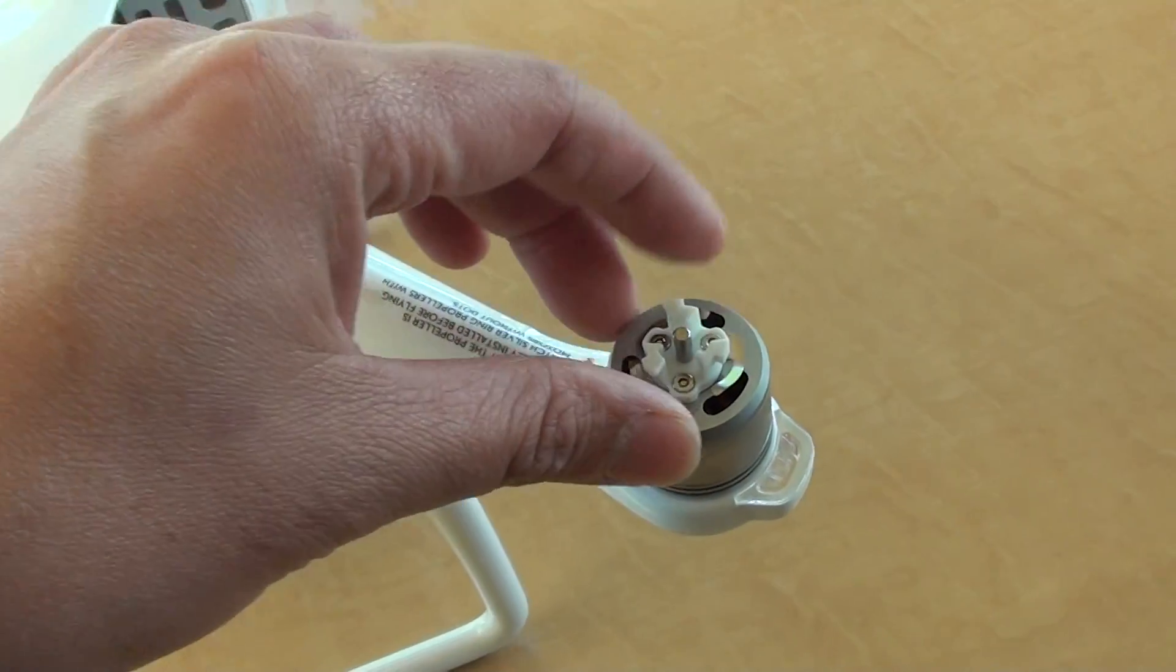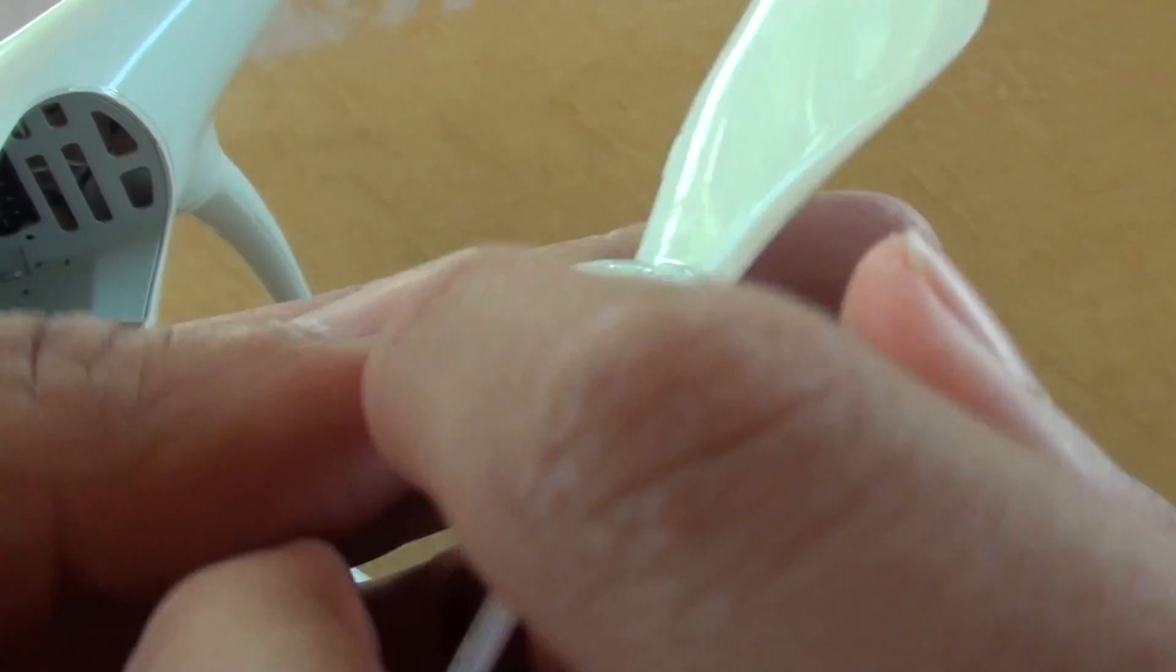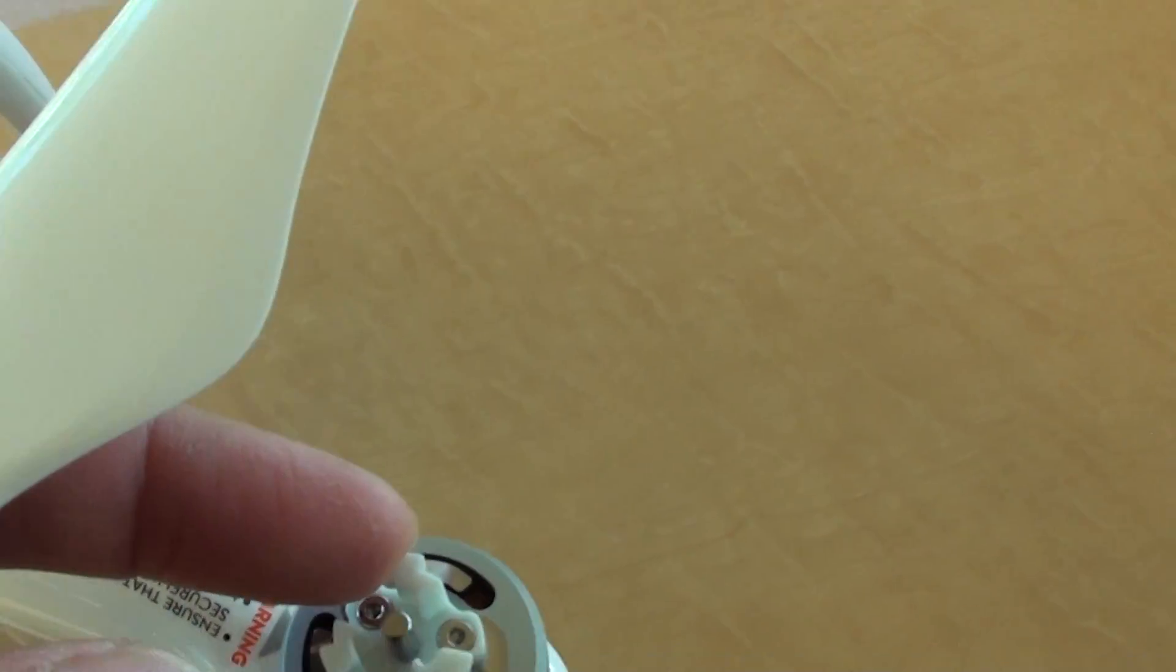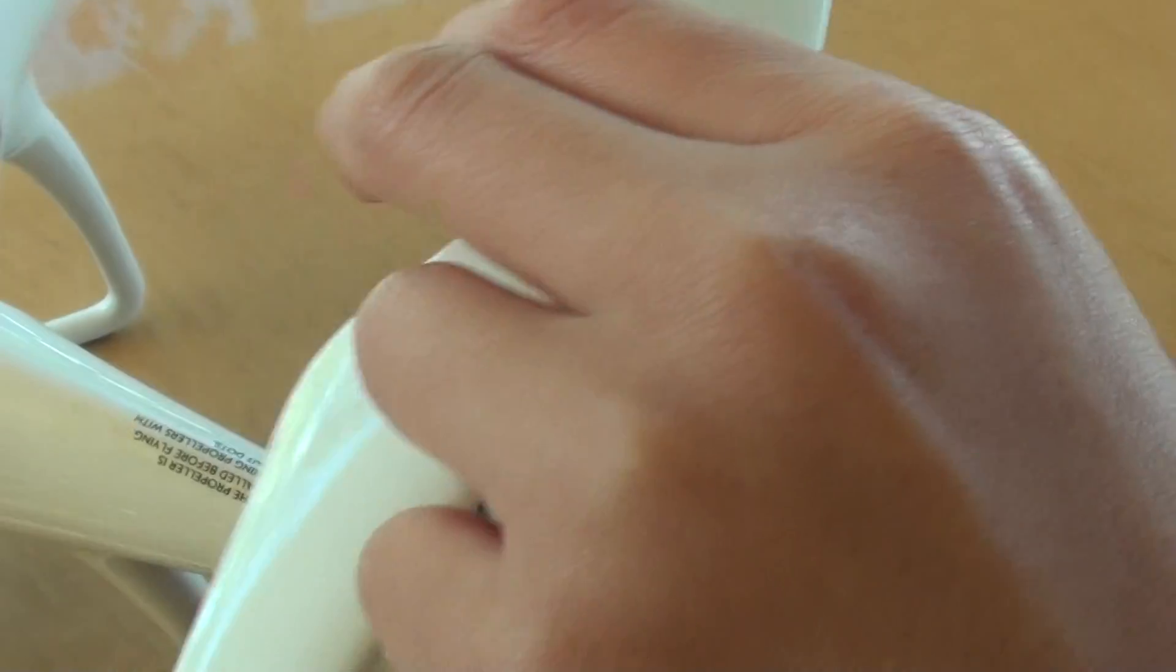Now to install the propeller, we want to grab the right one. With the silver one here, it has a white thing here. On the black one, you can see it has a black dot, so make sure you put it on the right one. Now put it down,